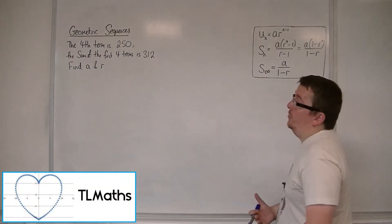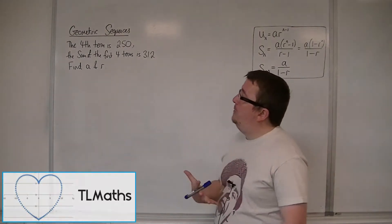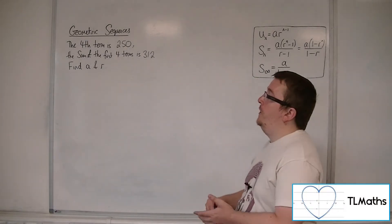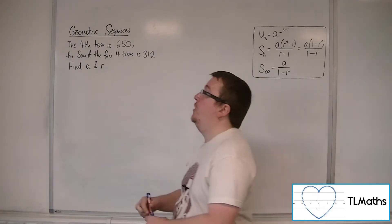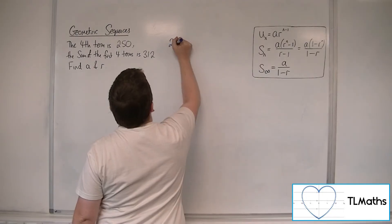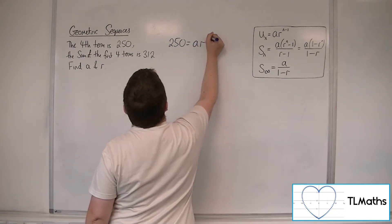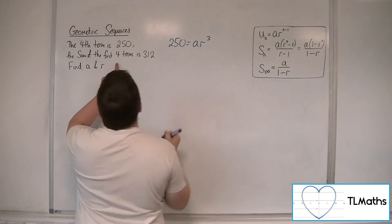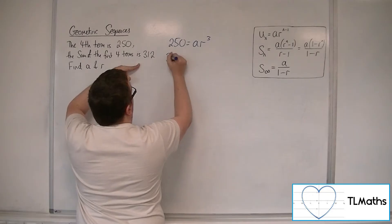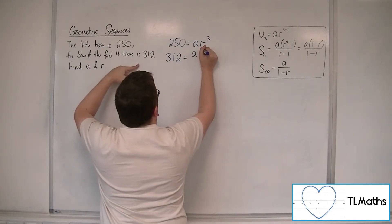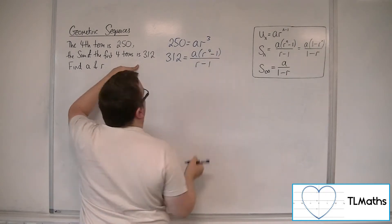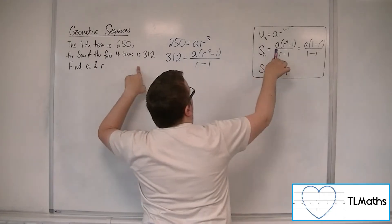We have a geometric sequence where the fourth term is 250 and the sum of the first four terms is 312. We want to find the first term A and the common ratio R. Since the fourth term is 250, using the nth term formula, 250 must equal AR cubed. And since the sum of the first four terms is 312, then 312 must equal A times (R to the 4 minus 1) over (R minus 1), using that formula.